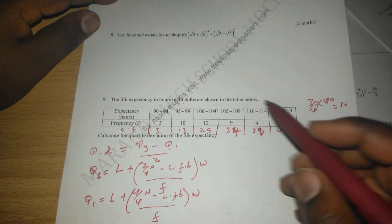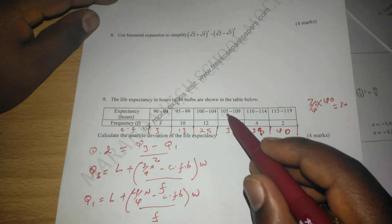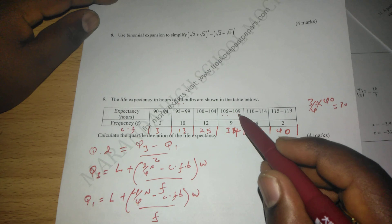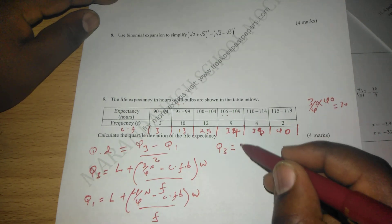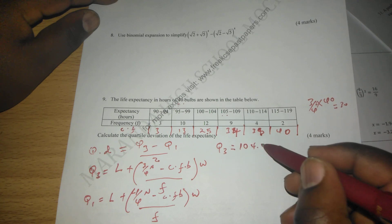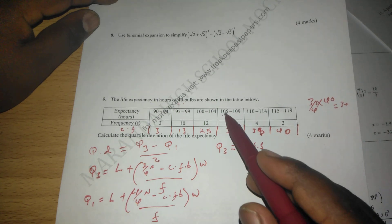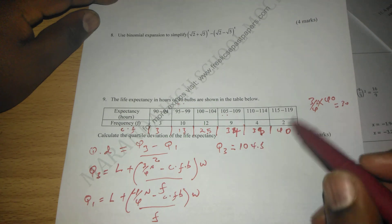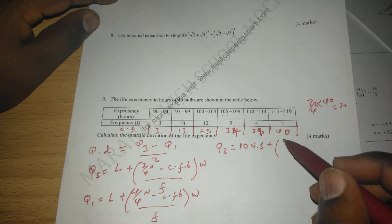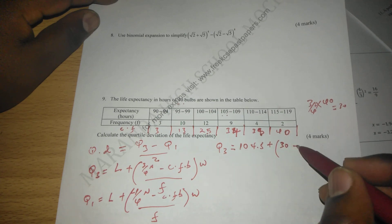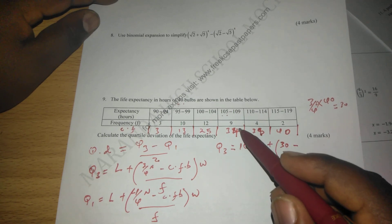So in this data, that lies at the class 105 to 109. So to get Q3, we need to get 104.5, which is the lower class boundary of this Q3 class. We add 3 quarters of the data, which is 30, minus cumulative frequency before this class, which is 25.